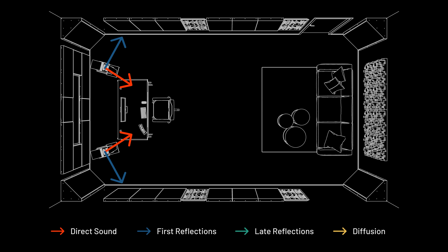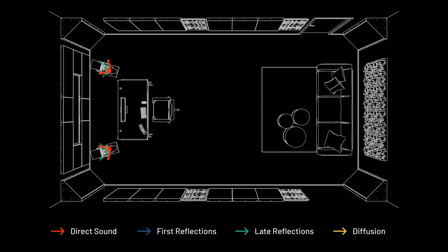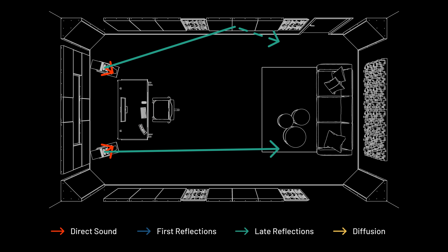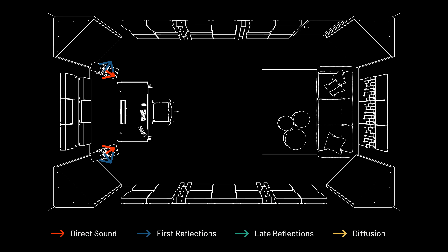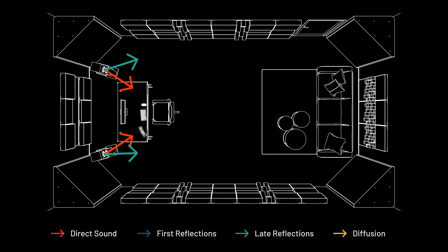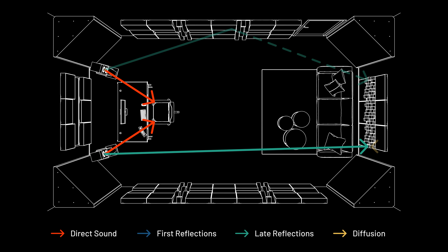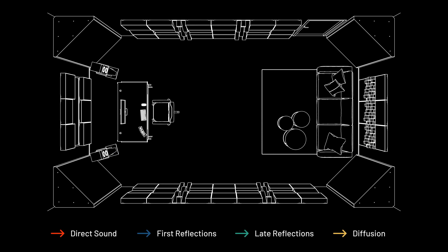For controlling direct and reflected sound, the efficient solution absorbs first reflections using Flat Panels VMT with Vick Spacer Plus, while Multifusor DC3 enhances spaciousness through diffusion. The professional solution uses Cinema Forte VMT, Cinema Fortissimo VMT, and Multifusor Wood MK2 to effectively absorb and diffuse sound, minimizing late reflections while maintaining clarity.